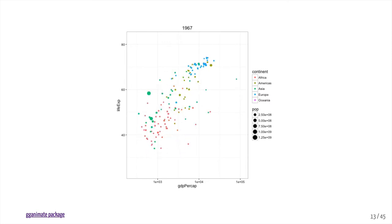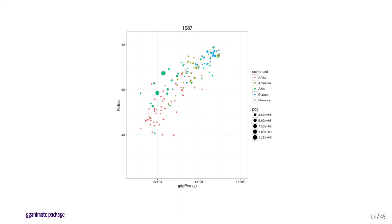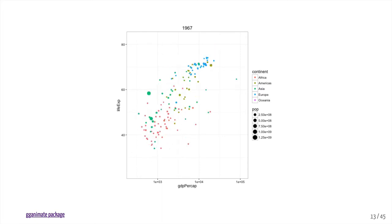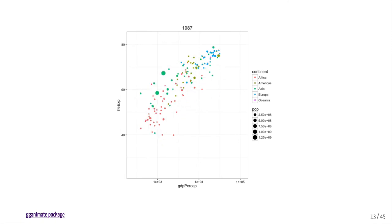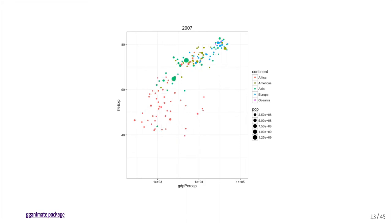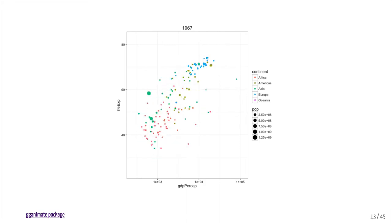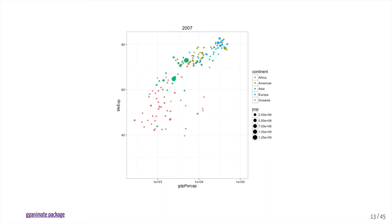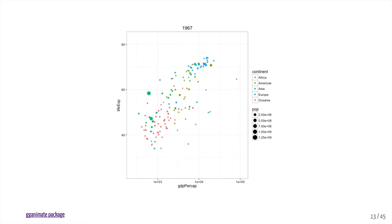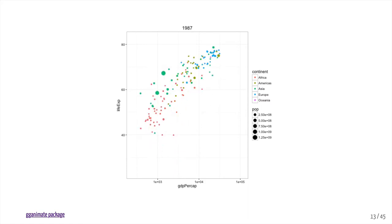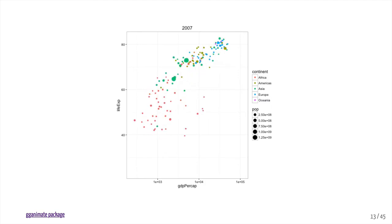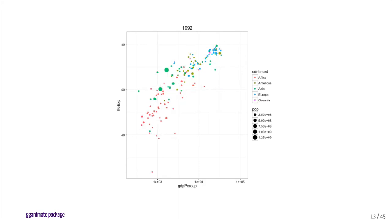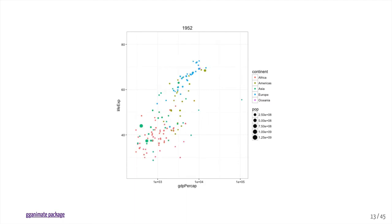Another example is the gganimate package, which builds upon the ggplot plotting tools. Here is data from the famous Gapminder dataset looking at life expectancy of different countries by GDP per capita. Each dot represents a different country, the color indicates the continent, the size of the point indicates the population, and it's animating over five-year increments. This is a really cool way to represent temporal data — instead of static images like in Excel, we can animate them to better represent temporal patterns. This plot has five different variables going on in a fairly simple and attractive way.